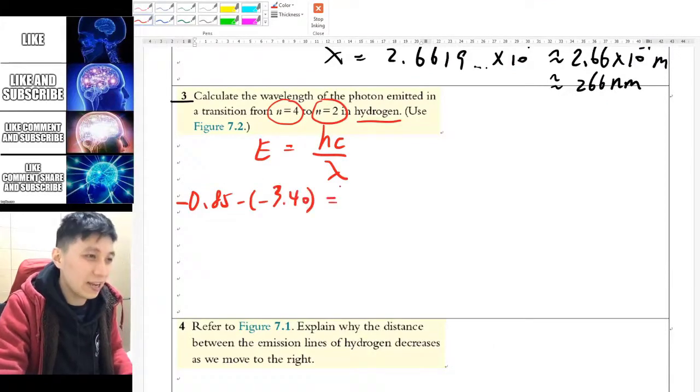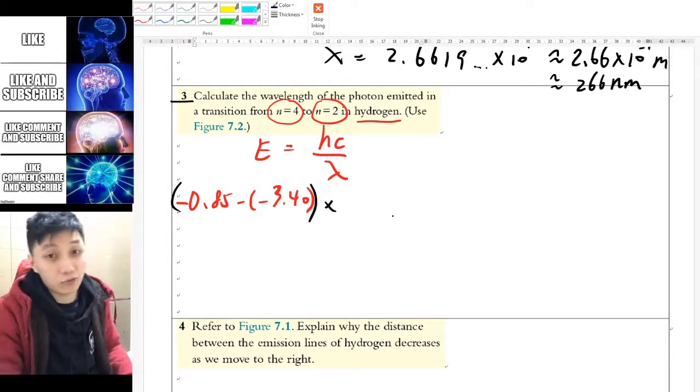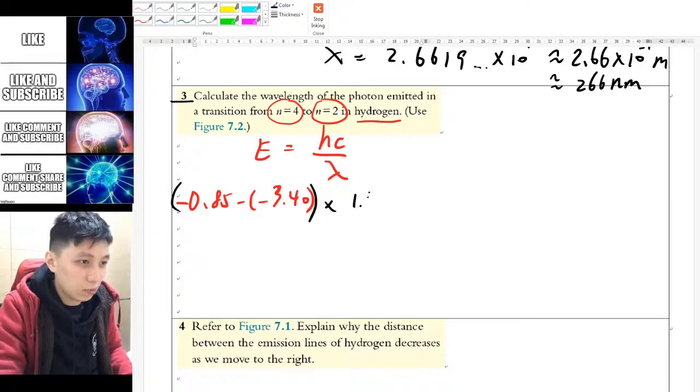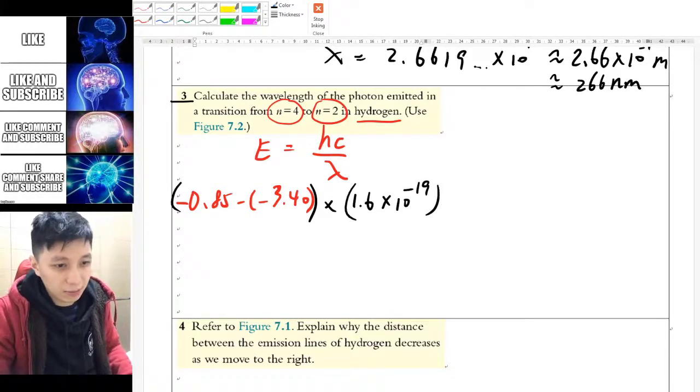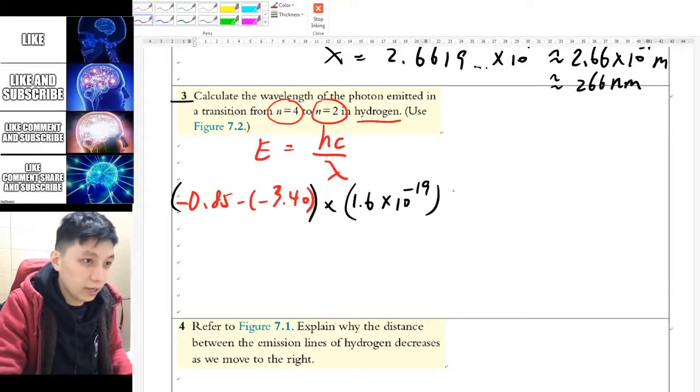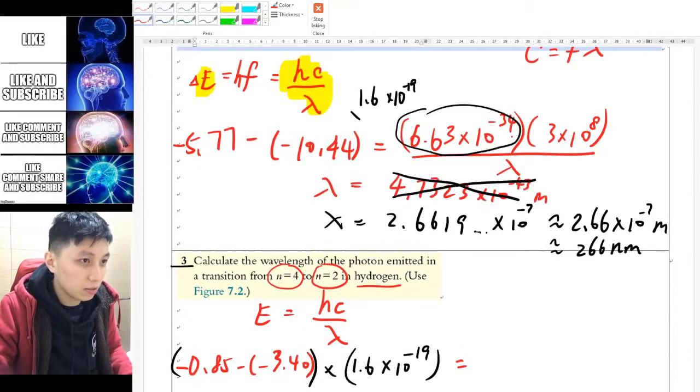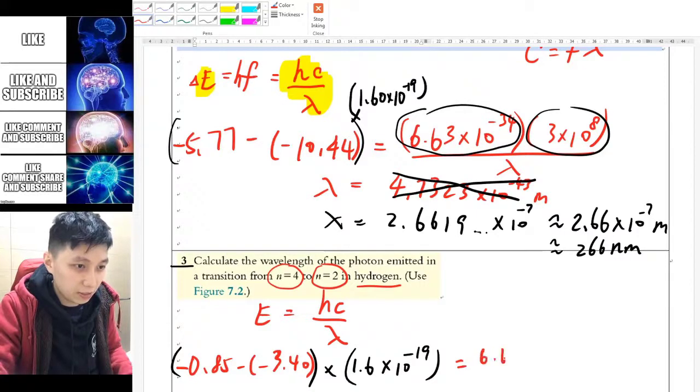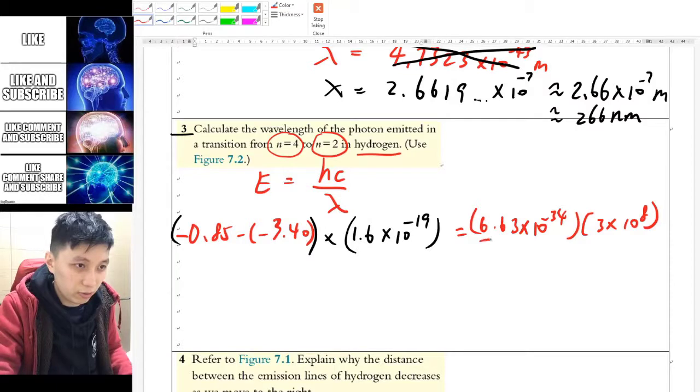And not to forget, we have to change it back to joule. And that's why times 1.6 times 10 to the power of negative 19. Let's double check that. Yes, that's the elementary charge. So you have converted that to joule. Planck constant, we will have 6.63 times 10 to the power of negative 34. And then c will be the same 3 times 10 to the power of 8. And then the wavelength.